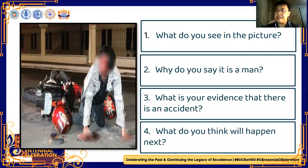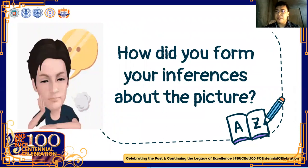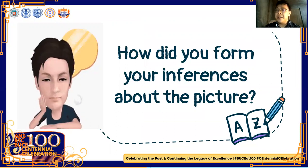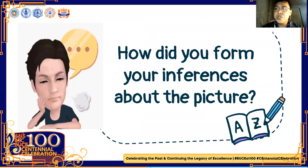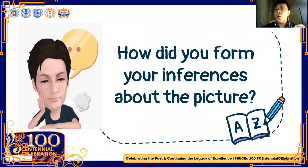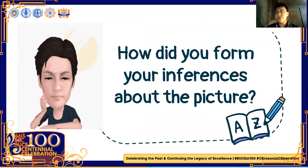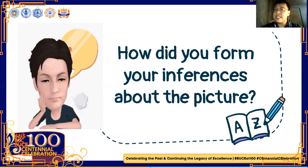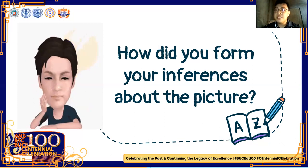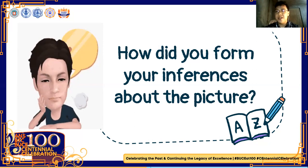And what do you think will happen next? The man might be rushed to the hospital. So how did you form your inferences about the picture? In forming inferences, we think about context clues or our own knowledge and experiences. What do we consider? Looking for details and matching those details to our own experiences and knowledge — that's how we form inferences.